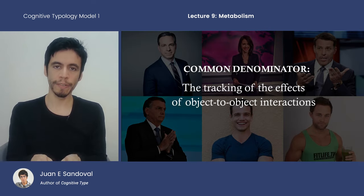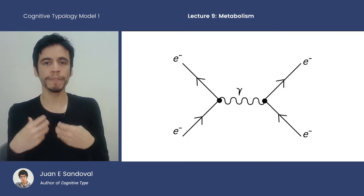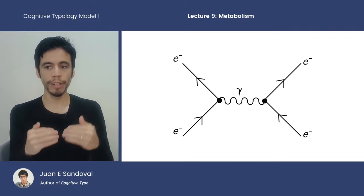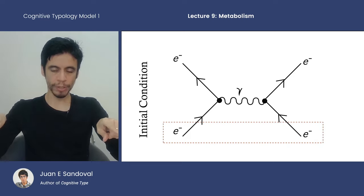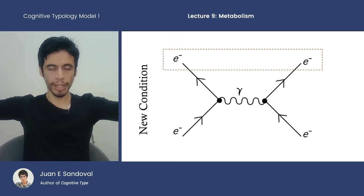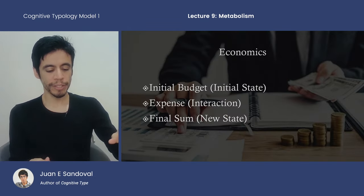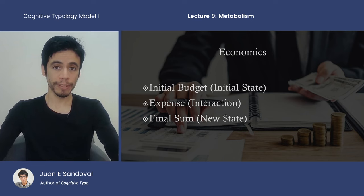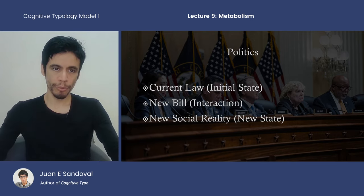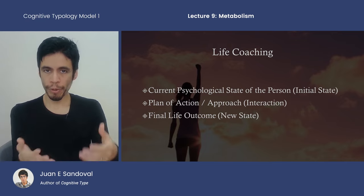To explain this, I want to make use of Feynman's diagram. It describes the process where there's an initial condition — the bottom two electrons — an interaction in the middle, and then a new condition afterwards. This is what is meant by causality in the CT model. In economics: initial budget, expense, final sum. In politics: current law, new bill, new social reality. In life coaching: current psychological state, potential intervention or plan of action, and the final outcome in their life.